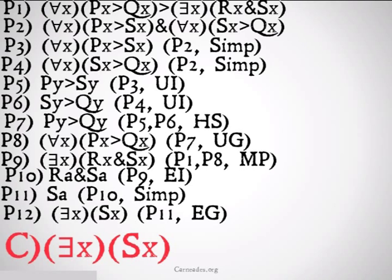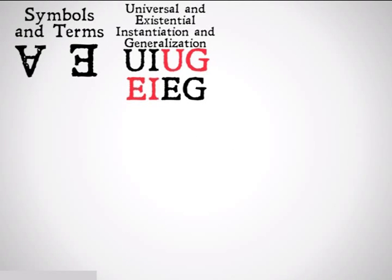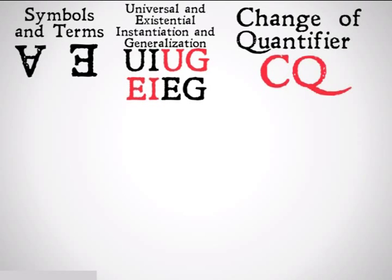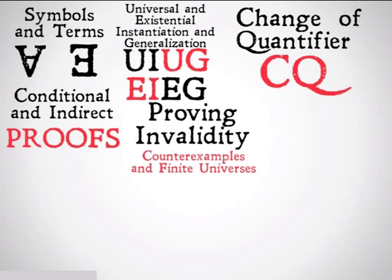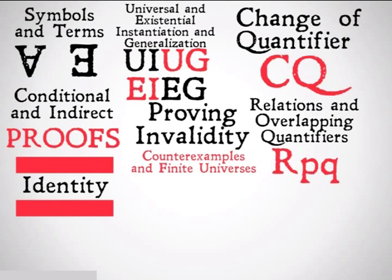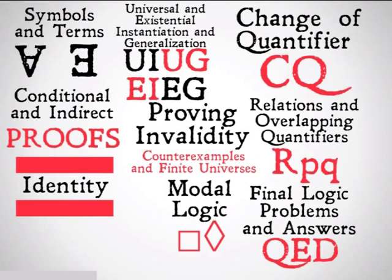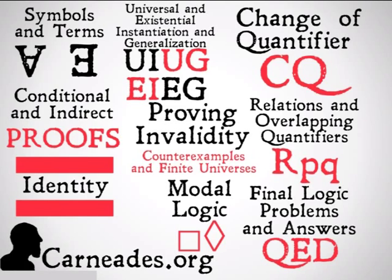Hopefully that made sense. If it didn't, look back through the video and see if you can understand it. We're going to be doing more proofs with these rules and more rules we'll be learning. We'll also have final questions and answers at the end of this ten days. That was universal and existential instantiation and generalization. Next up: the change of quantifier rule, conditional and indirect proofs, proving invalidity, relations and overlapping quantifiers, identity, modal logic, and finally some final logic problems and answers. Watch a new video every single day for 100 days at carnades.org and stay skeptical, everybody.